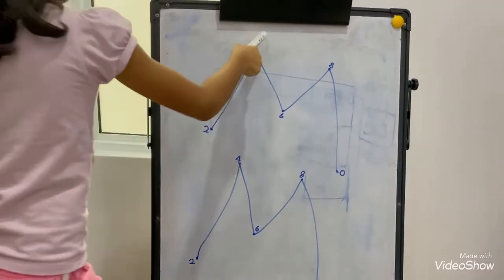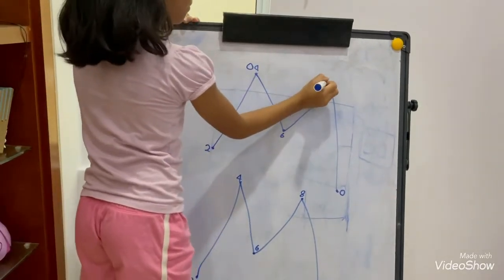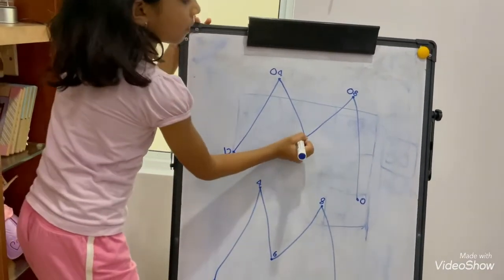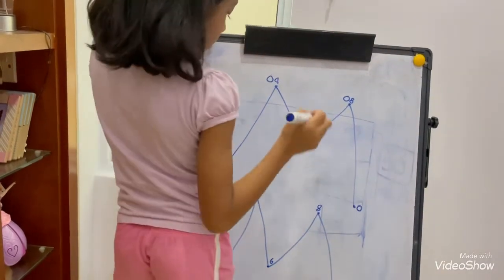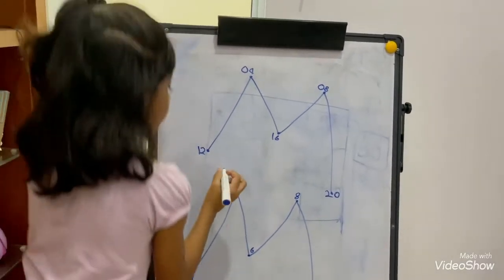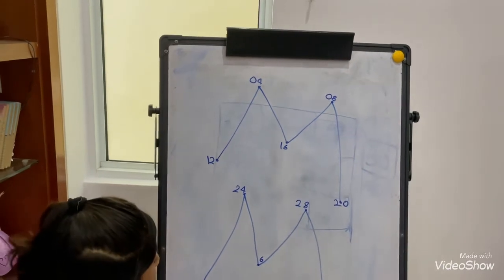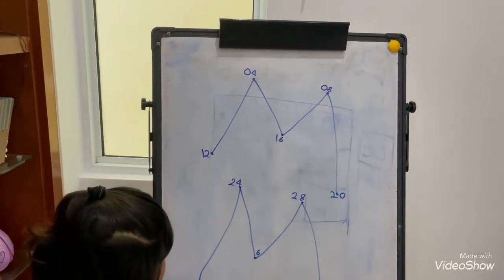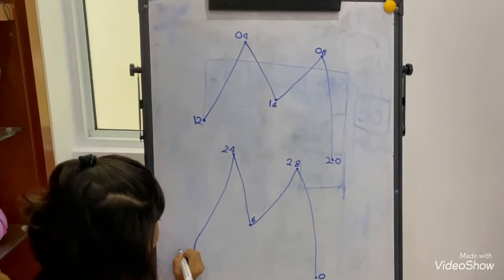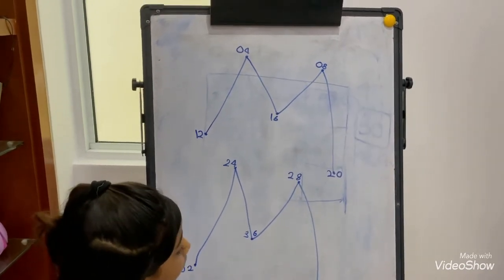So, first, here, you have to write 0. Second, you have to write 1, 1, and for the 0, you have to write 2. Here, 2, 2, and here is 3, 3, 3, 4.